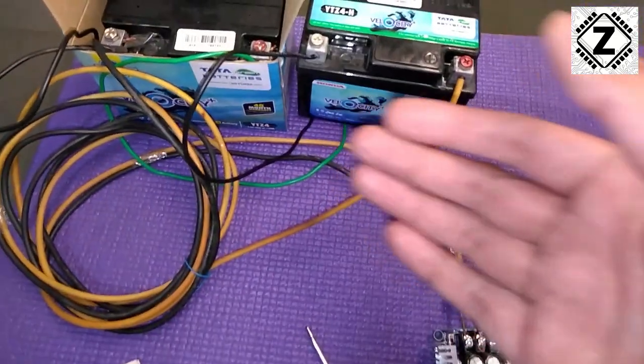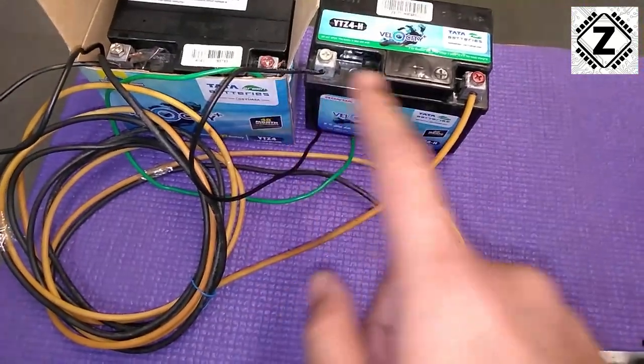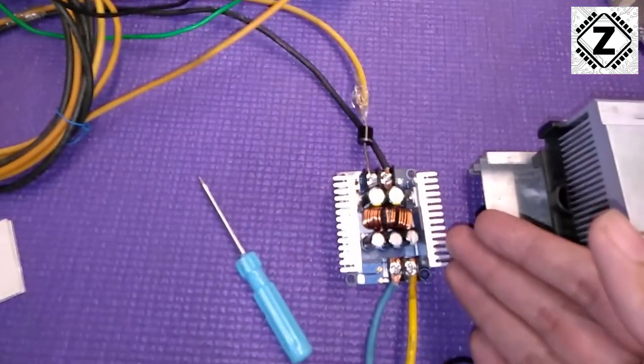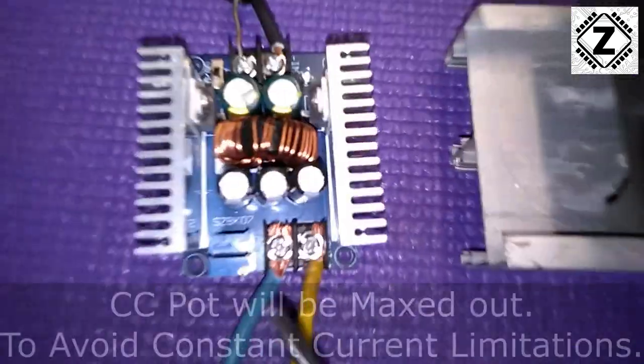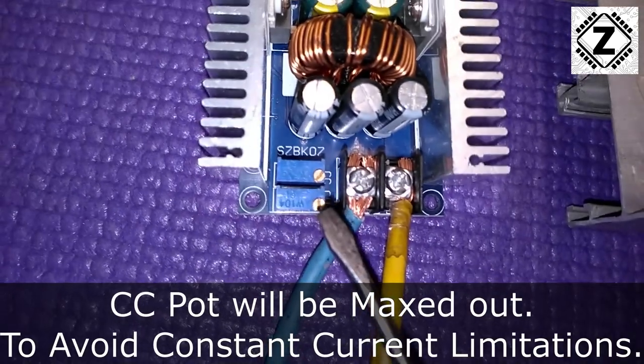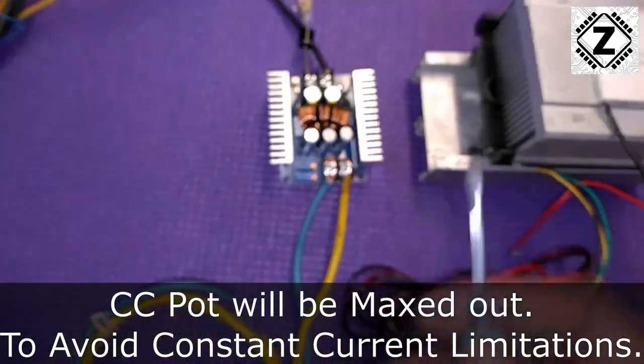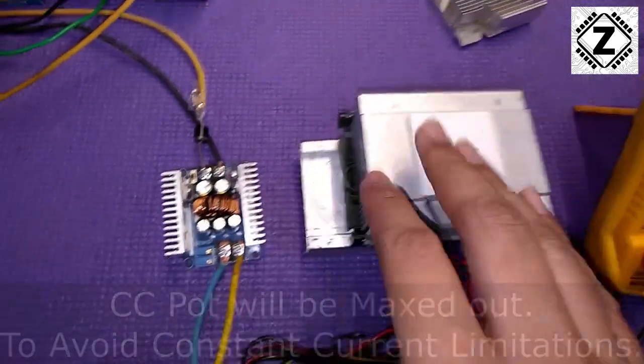The power goes to this DC to DC module and it can be adjusted using these trim pots. If you want to buy this DC to DC module or this Peltier or any of these meters, buying links will be in the description below.